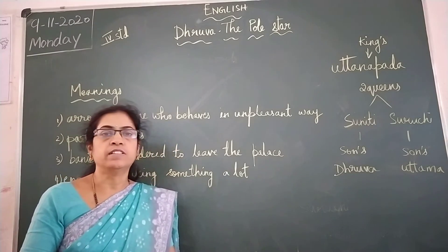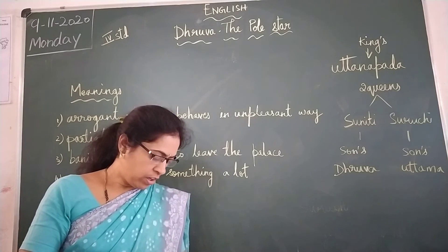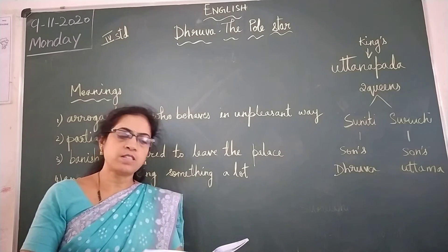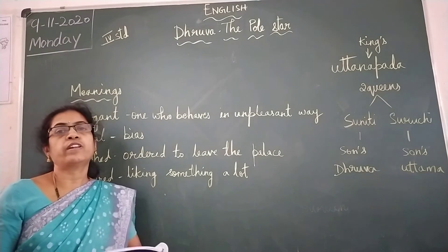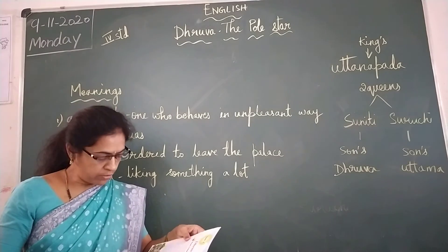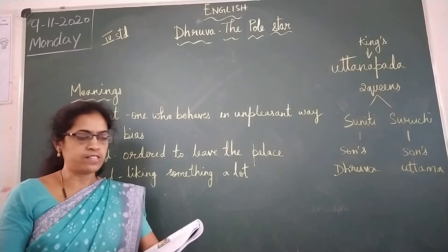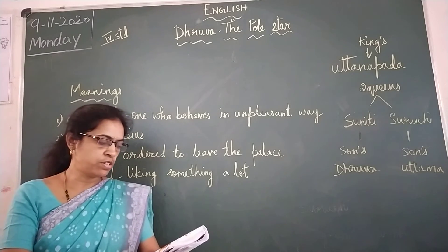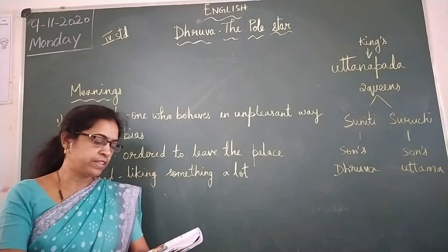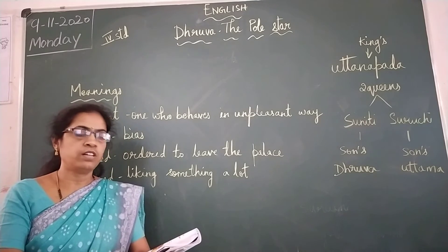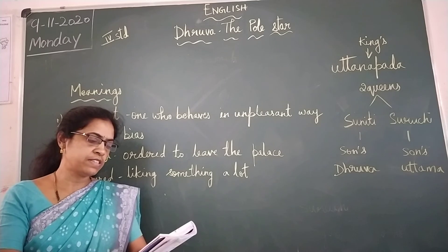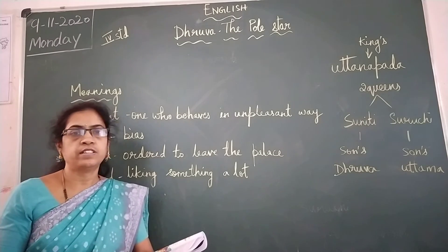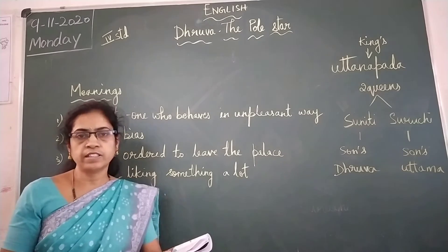Again and again he questioned his mother; however, she had no answers. So many times he used to ask why they were away from the palace and why his father was not coming. One day, Dhruva, longing to see his father, despite Suniti having forbidden him, went to the palace to meet the king.